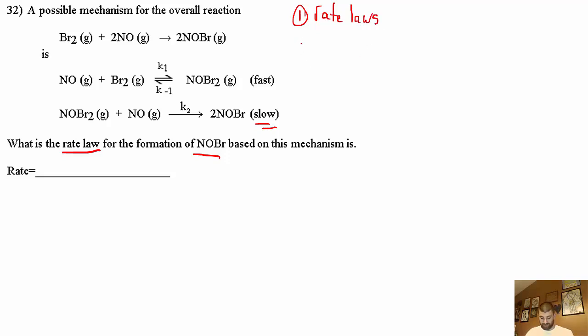First step we want to do is the rate laws for each. For this one the rate equals K NO times Br2. Now this equilibrium also tells us there's a reverse reaction that is the same rate as the forward reaction. So R equals K1 for the forward reaction which also has to equal the reverse reaction, so K minus 1 times the concentration of NOBr2.